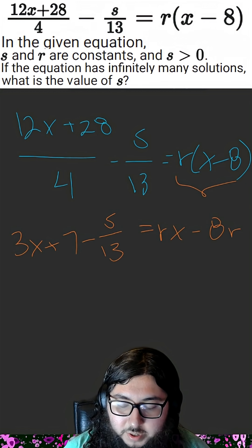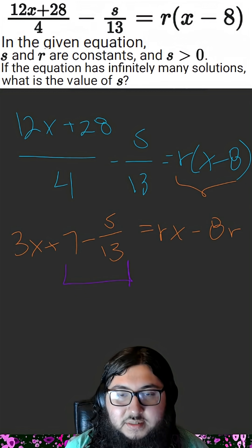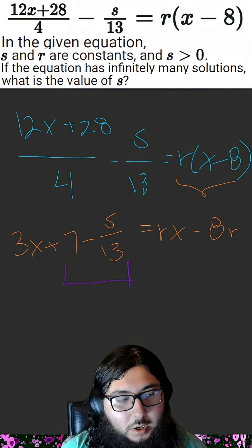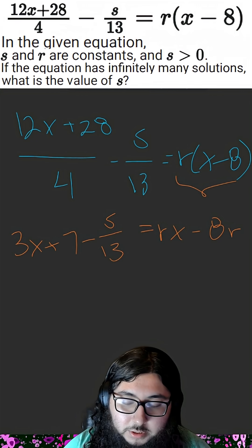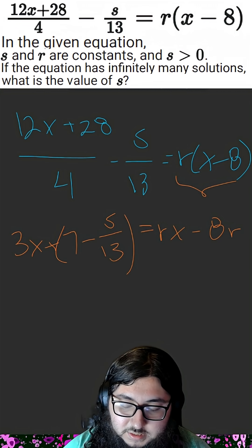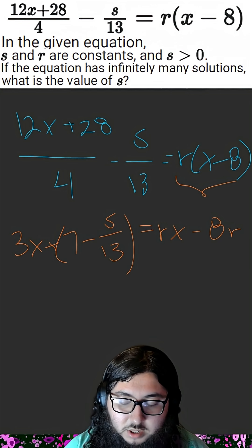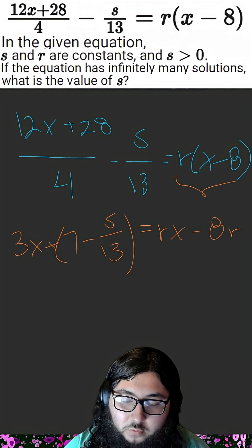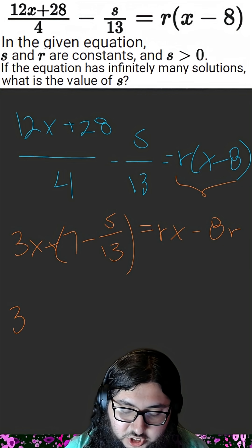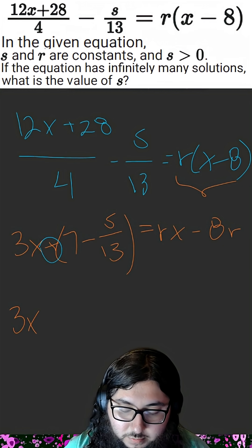Our next step is to recognize that s over 13 is itself just another constant, because in the problem, it states that s and r are constants. So what we can do is put this in parentheses, indicating that it's just one constant, and then factor out a negative 1.